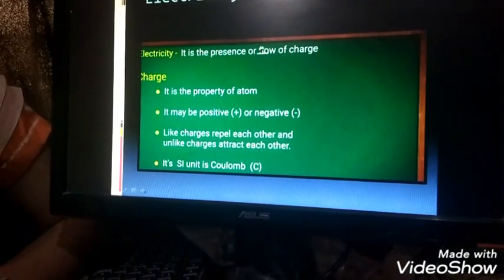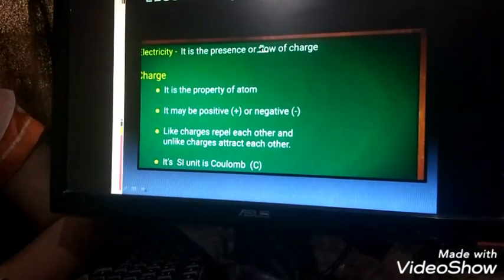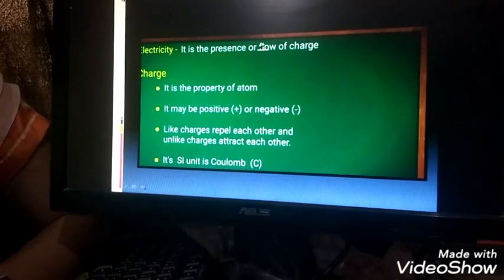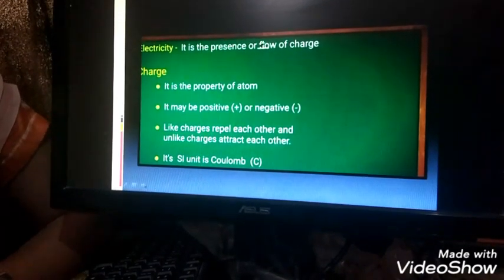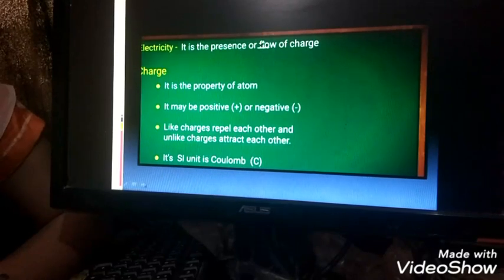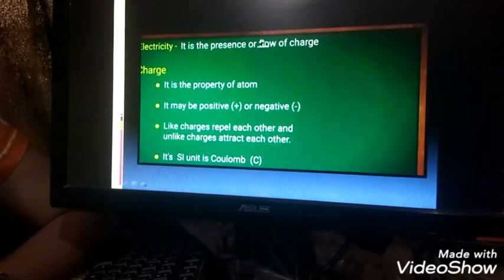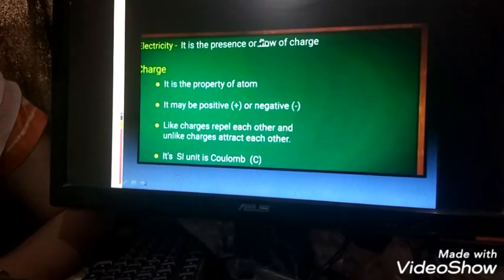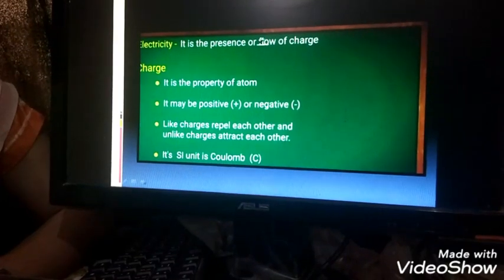And you know that like charges repel each other and unlike charges attract each other. Now this charge is represented by the symbol Q and its SI unit is Coulomb.